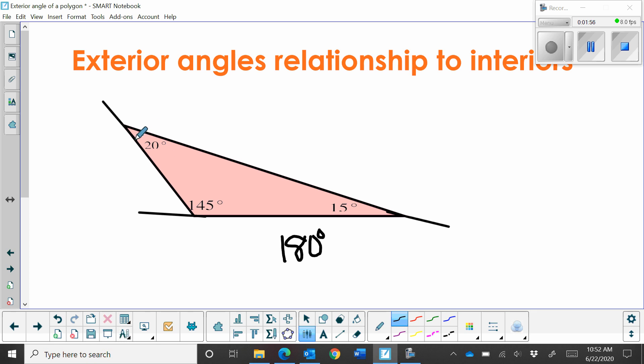Now the exterior angle has a relationship because these are a linear pair. So if the inside is 20, the exterior angle is 160. Why?